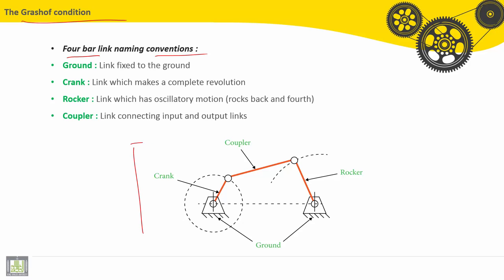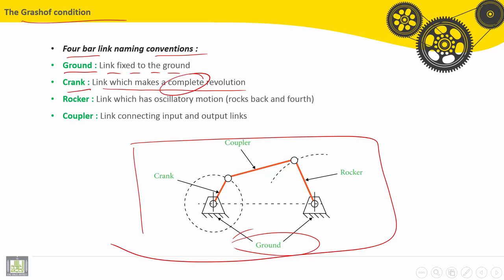Here we have a four-bar mechanism. This is the ground link, fixed to the ground. The crank is the link which makes a complete revolution. The rocker link has oscillatory motion. The coupler is the link connecting input and output links, connecting the crank and the rocker.